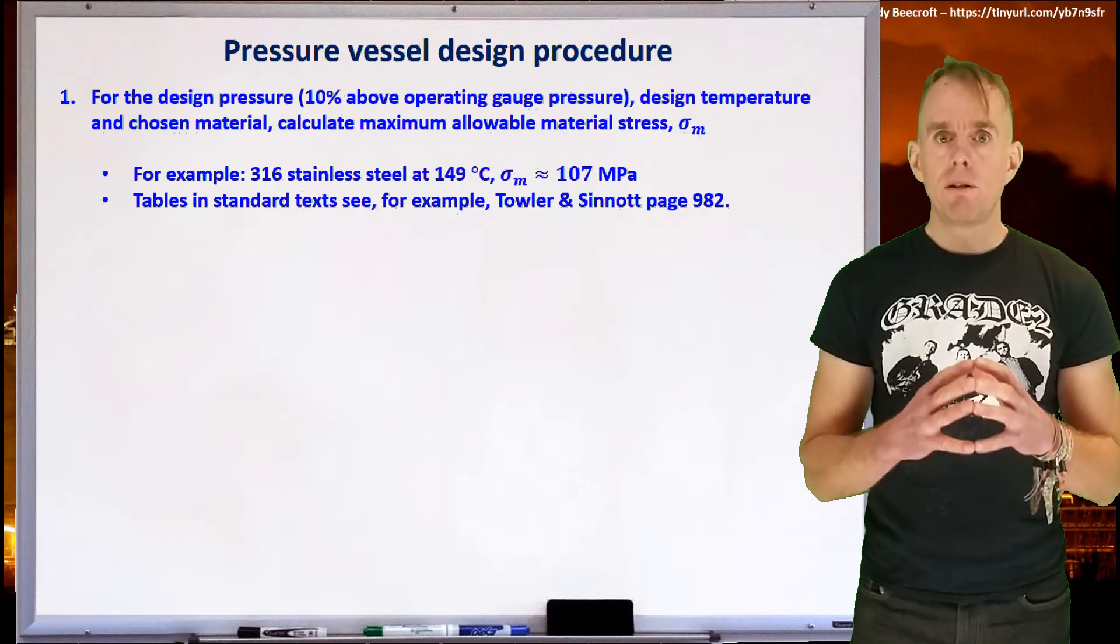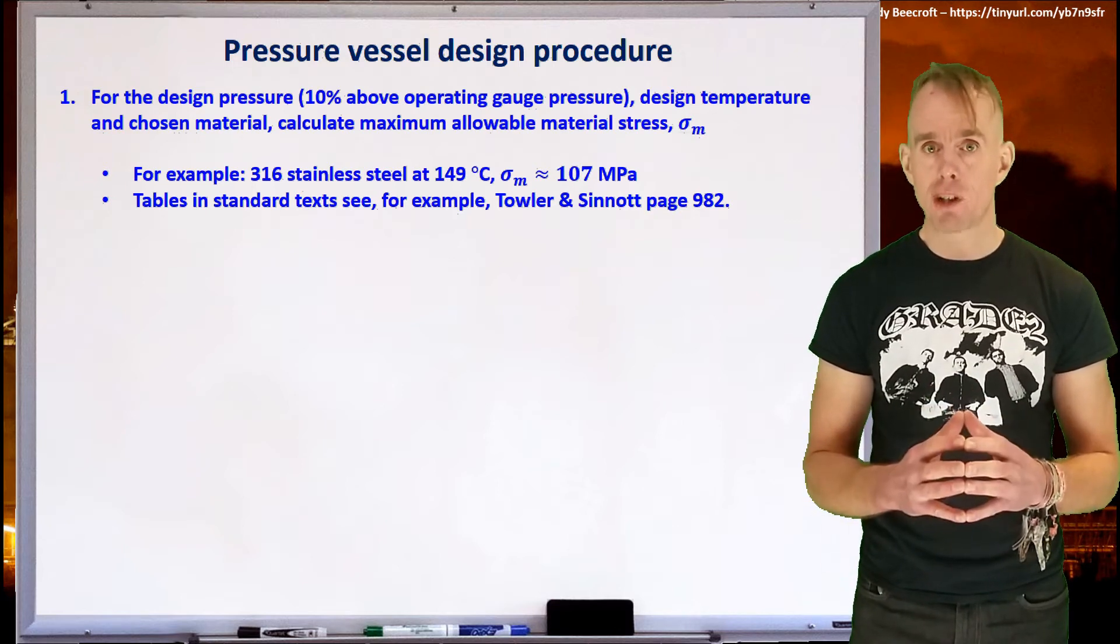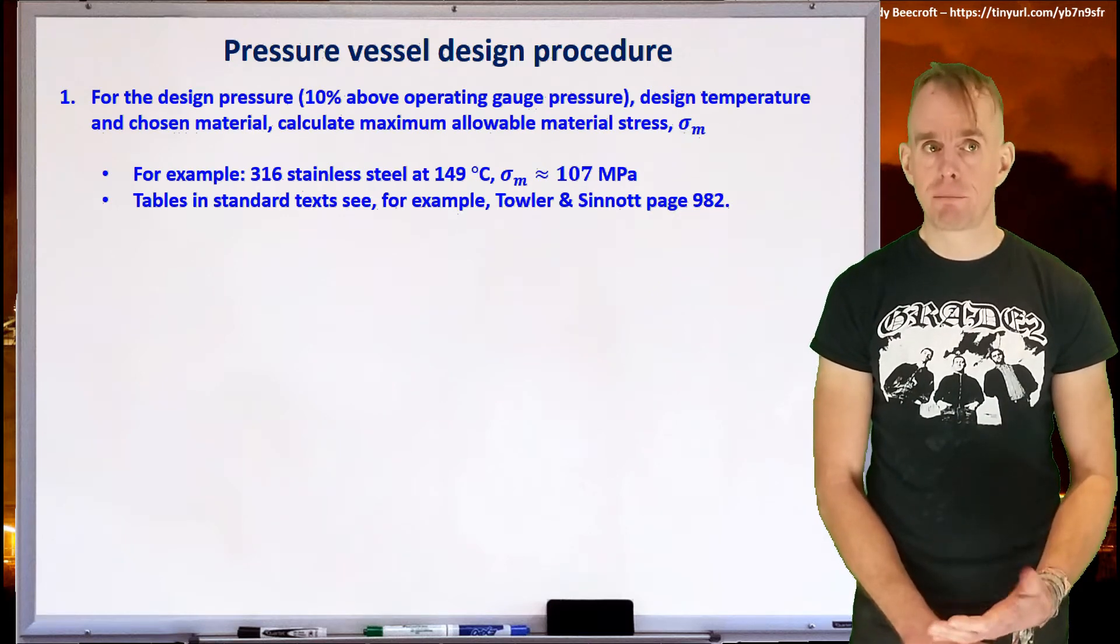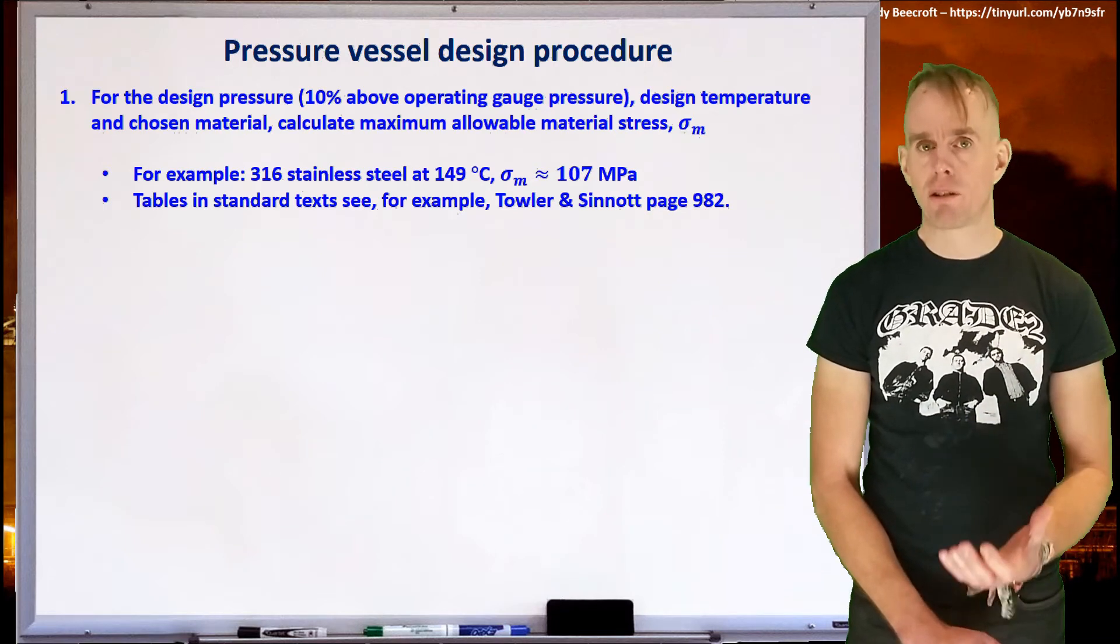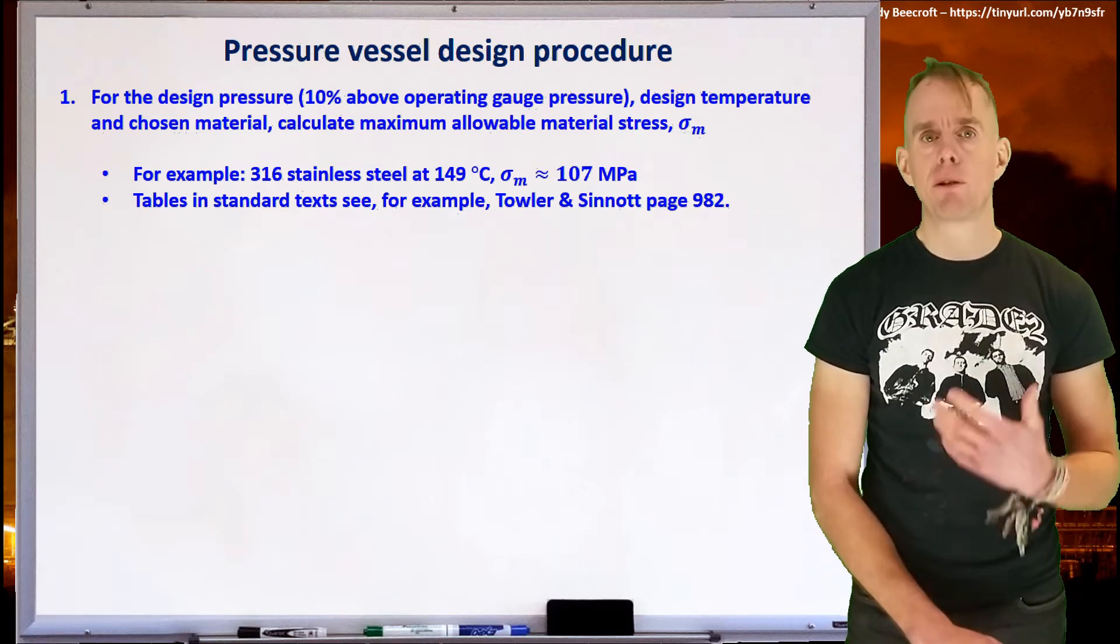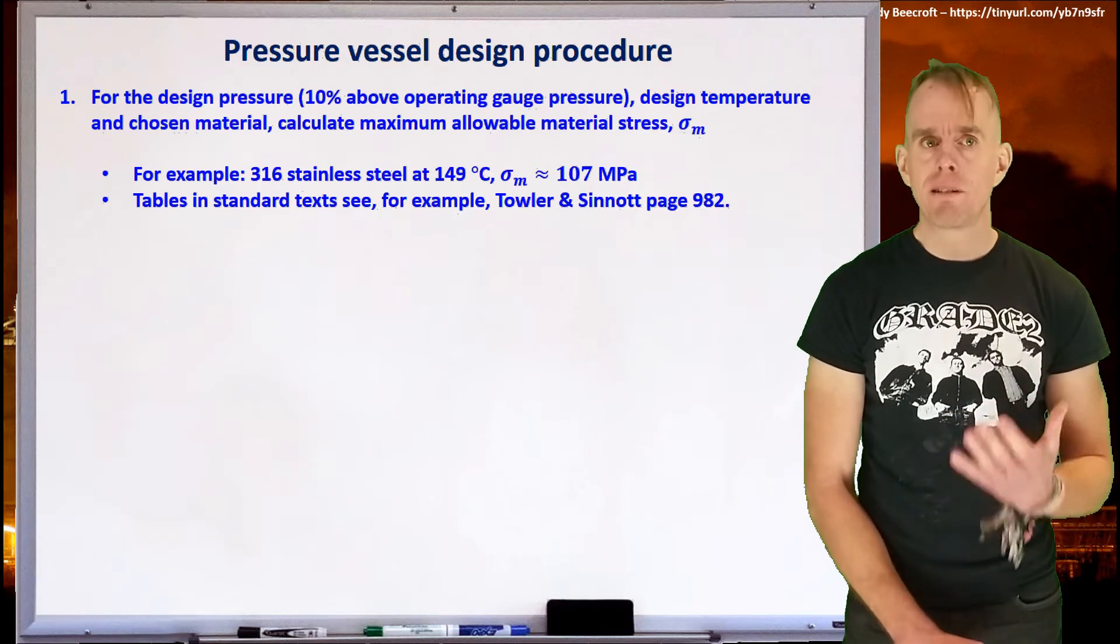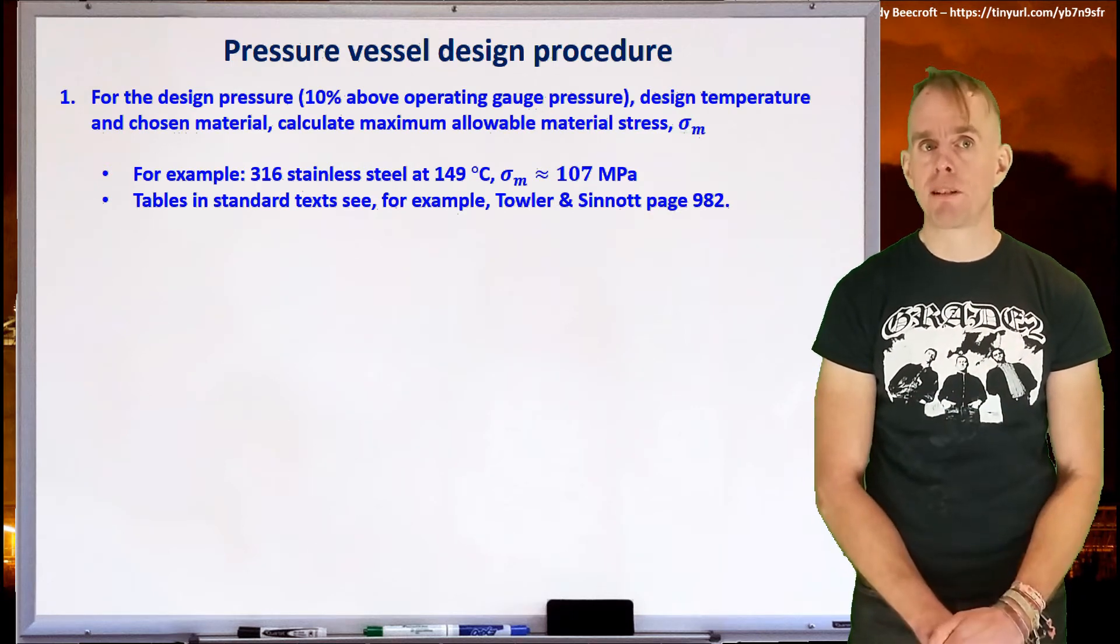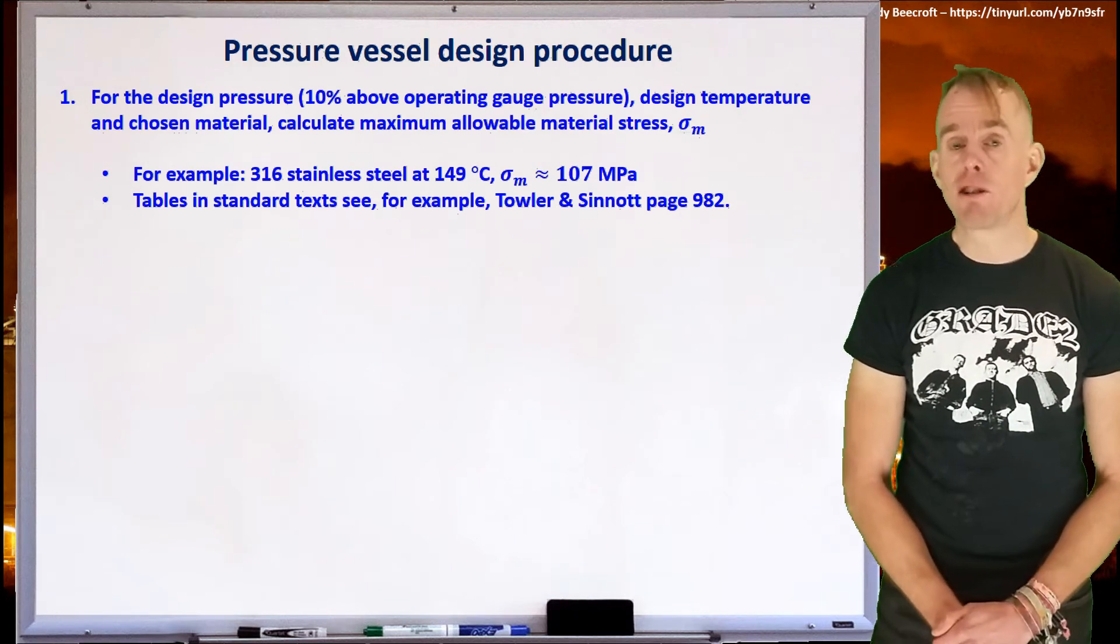So, first of all, you need to establish your design pressure. Your design pressure is 10% more than your operating gauge pressure. You also need to establish your design temperature and to choose your material. From your design temperature and your materials choice, you will figure out what your maximum allowable stress is. So, for example, if you've specified an expensive material, such as 316 stainless, and if your design temperature is around 150 degrees C, your maximum allowable material stress is going to be about 107 MPa. You can find out what the maximum allowable material stresses are for a whole range of other materials by referring to Towler and Sinnott, page 982.